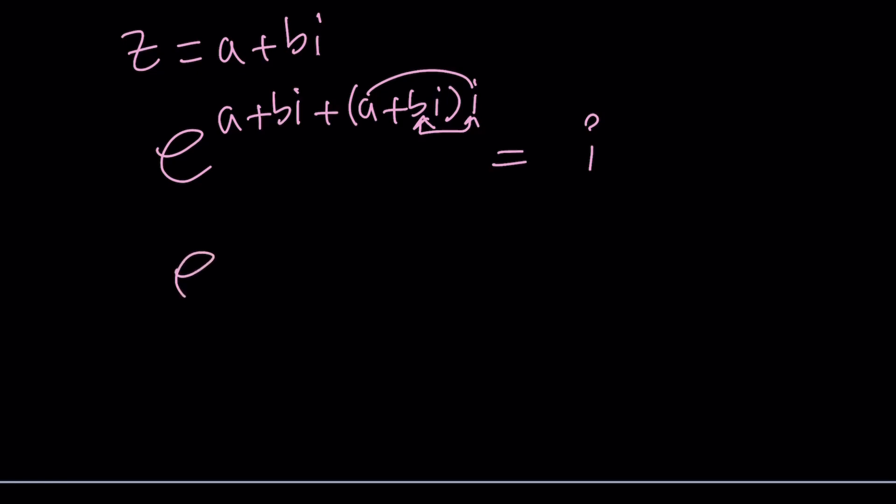And plus bi squared which is minus b because i squared is negative one. So a minus b is going to be the real part and the imaginary part is just going to be bi plus ai or I can just write it as a plus b multiplied by i. And then that should equal i.